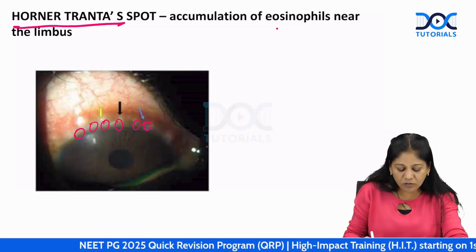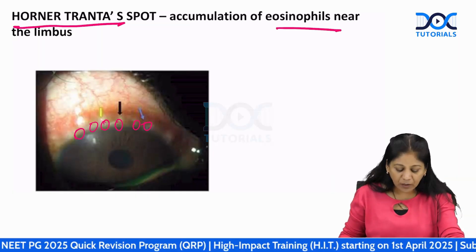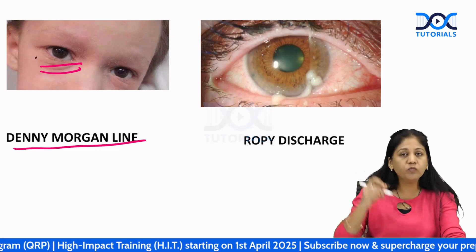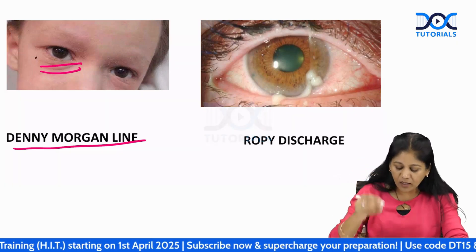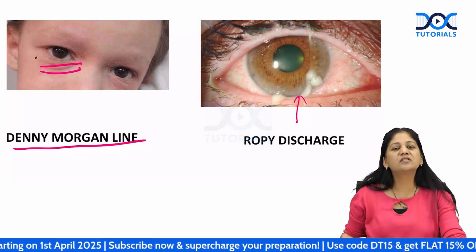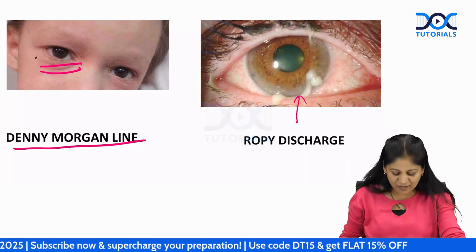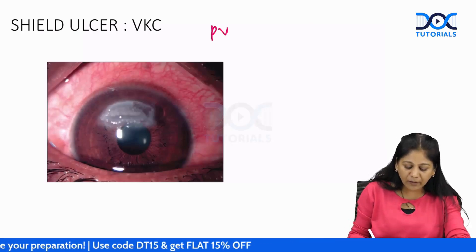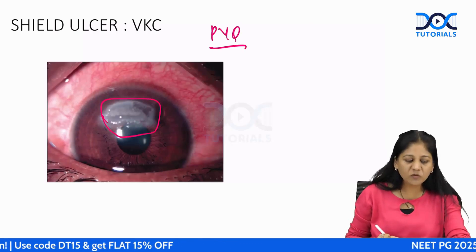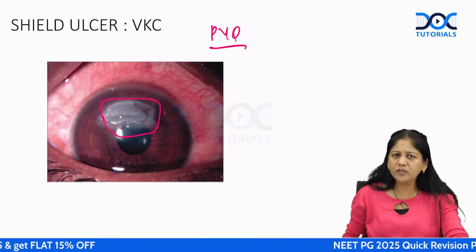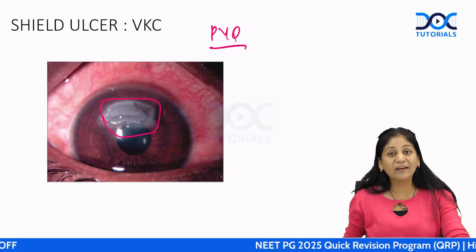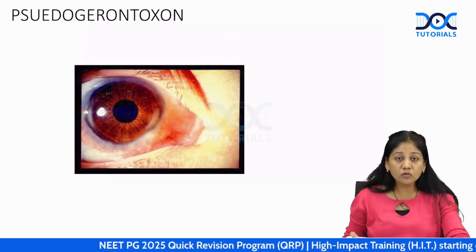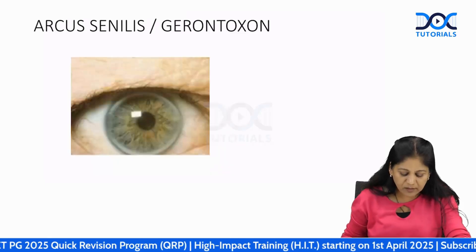Horner-Tranta spots are accumulations of eosinophils near the limbus. We can also see Dennie-Morgan lines — skin folds due to continuous itching. The ropy discharge is very thick. Another feature is the shield ulcer, which is characteristically seen in VKC and is a common PYQ.